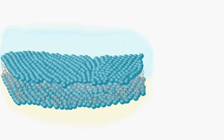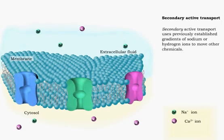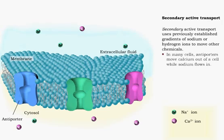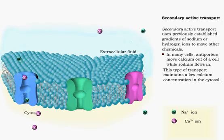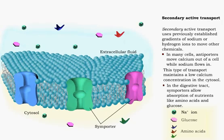Secondary active transport occurs when the concentration gradient of sodium or hydrogen ions, produced by primary active transport, drives the transport of another chemical. Low cytosolic calcium levels are maintained by secondary active transport. Another example of secondary transport is the absorption of nutrients from the digestive tract into intestinal cells.